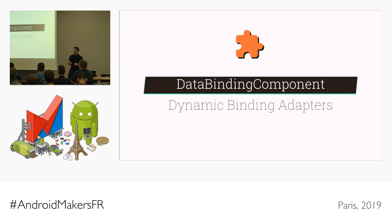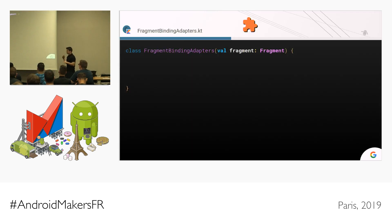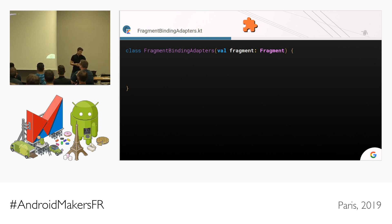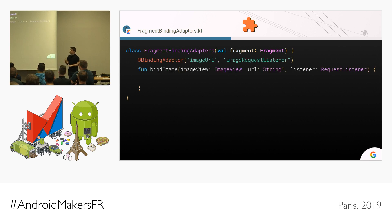There's a fourth way of defining binding adapters, and it's using the data binding component. This creates dynamic binding adapters. You might not be familiar with this because the API of data binding component is a bit limited. Let's say you want to use an object that is usually only available at runtime, like a fragment inside a binding adapter — you can use this with a data binding component. We create a class, put binding adapters inside this class. You don't need the @JvmStatic annotation — this is actually going to be an instance method.